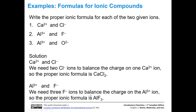For aluminum three plus and the fluoride anion, the fluoride is minus one and aluminum is three plus. That means we need three negatively charged fluoride anions to balance out the charge on the aluminum three plus cation. The proper ionic formula is aluminum with assumed subscript one, and then three fluoride anions.